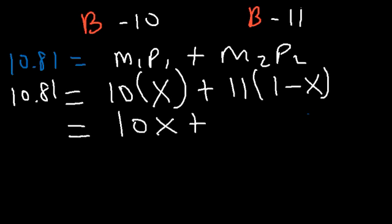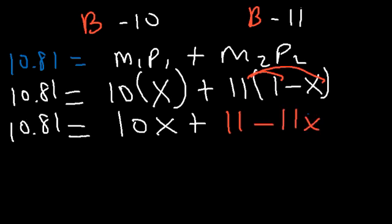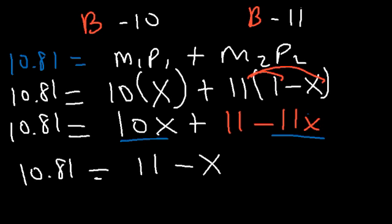So this is going to be 10X, and if we distribute the 11, we're going to have 11 minus 11X. And let's go ahead and add like terms. 10X minus 11X, that's going to be negative X. And if we subtract both sides by 11, 10.81 minus 11, that's negative 0.19, which is equal to negative X.